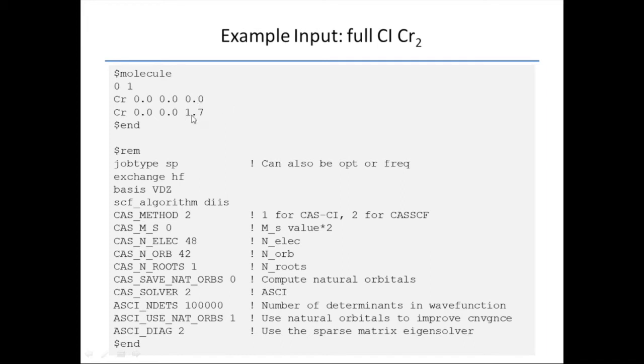Here's an example input with ASCIISCF. This is full CI chromium dimer. CAS_METHOD=2. So you're running CASSCF on a singlet, 48 electrons, 42 orbitals. You only want one root. The CAS solver is 2, it's ASCI. We are running with 100,000 determinants. We're going to use natural orbitals to improve the convergence. We're using the sparse matrix eigensolver.